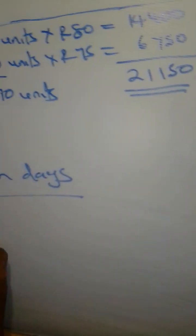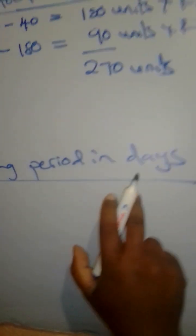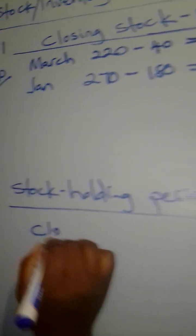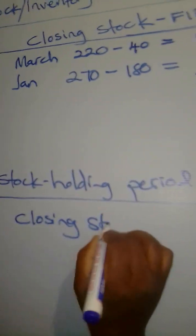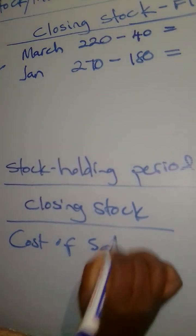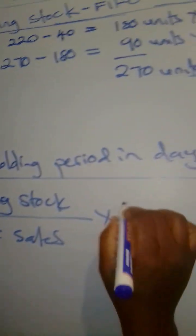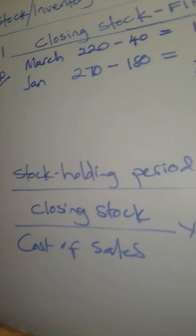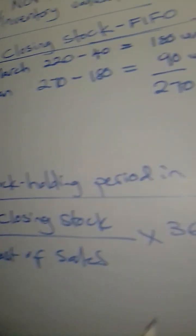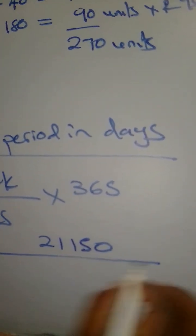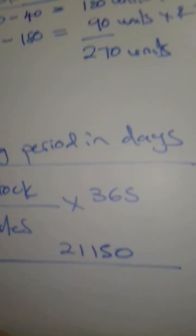Now we are looking at the stock holding period in days. The formula is: closing stock divided by cost of sales, times 365 days. Our closing stock is R21,150. We now need the cost of sales. How do we calculate the cost of sales?